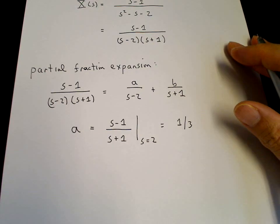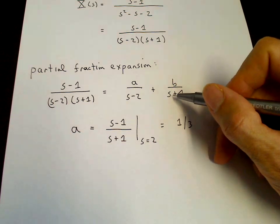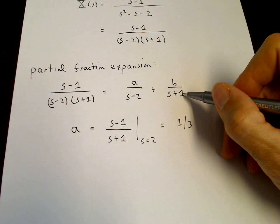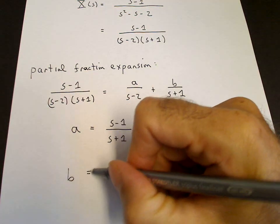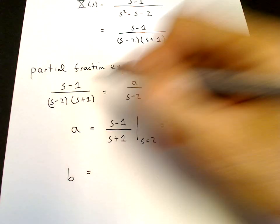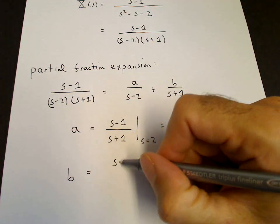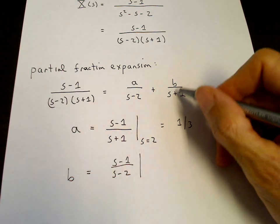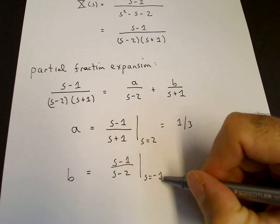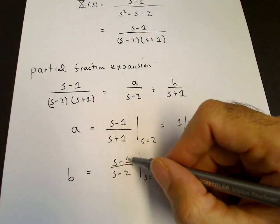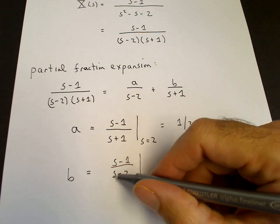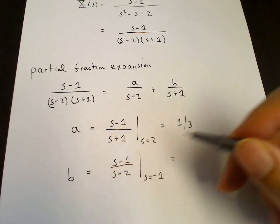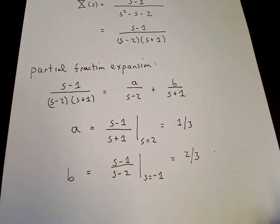We can do the same trick for B. So to isolate B, we would multiply by S plus 1 and set S equal to minus 1, so that we would get B. This term would vanish. We multiply by S plus 1, so we have S minus 1 over S minus 2. And we set S equal to minus 1. So this would be minus 1 minus 1, which is minus 2, over minus 1 minus 2, which is minus 3. So minus 2 over minus 3 is two-thirds.